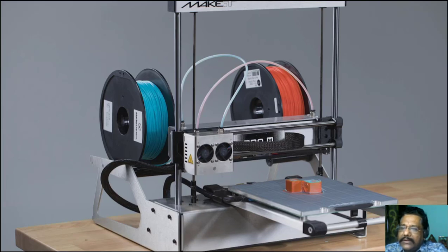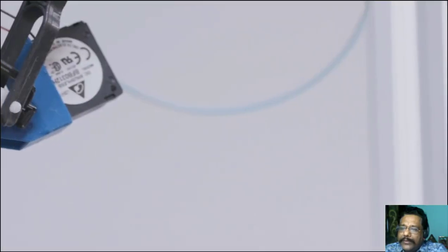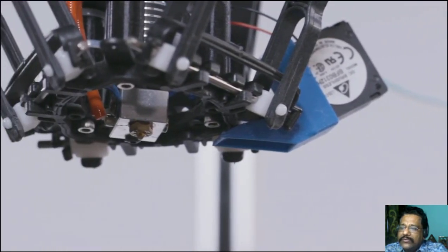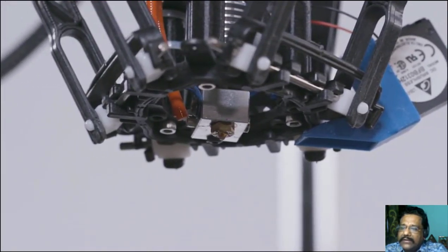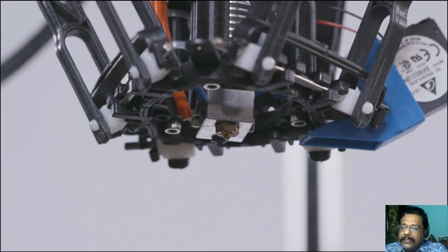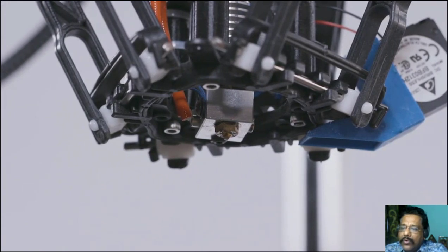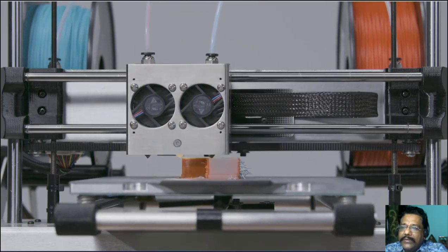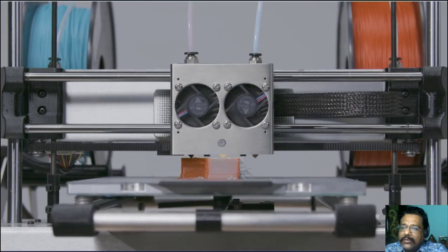The print bed lowers into this pool and a laser starts shooting into the photopolymer, hardening where it hits. As the print head raises from the pool of liquid, there's your shape, there's your object. Those are the two most popular: FDM being the most popular.